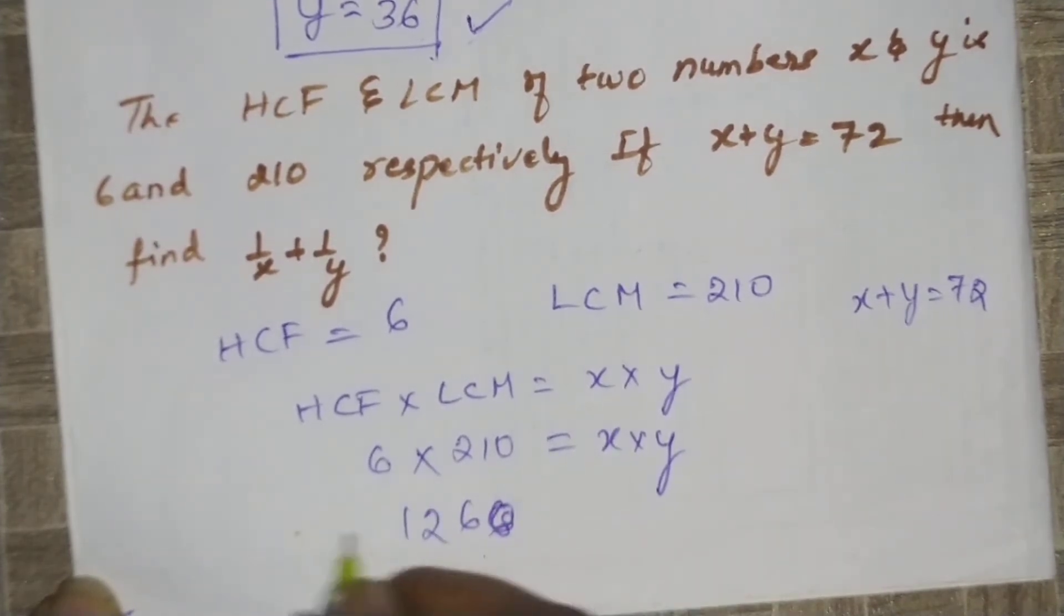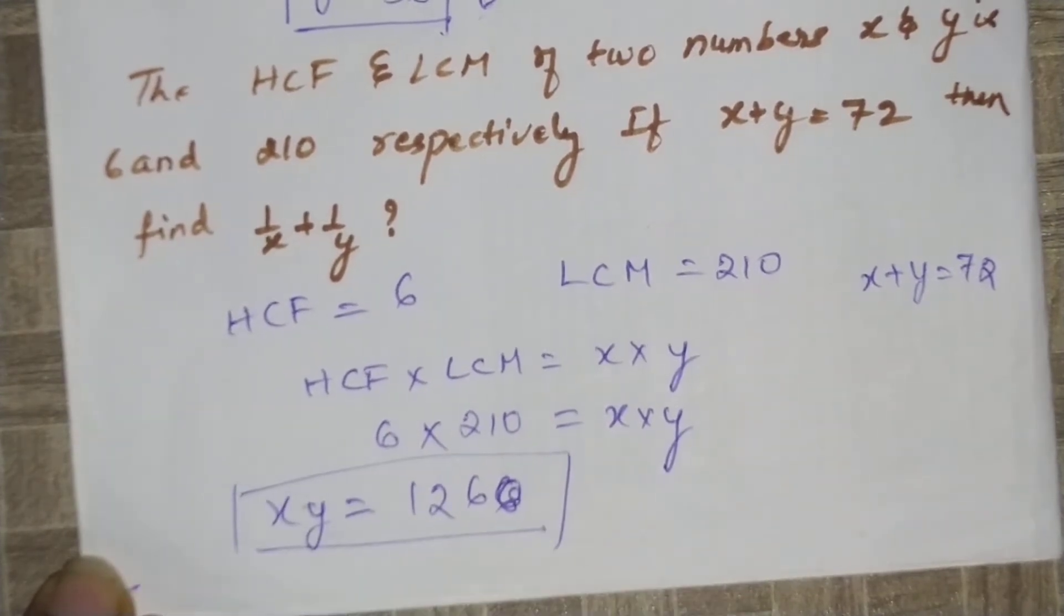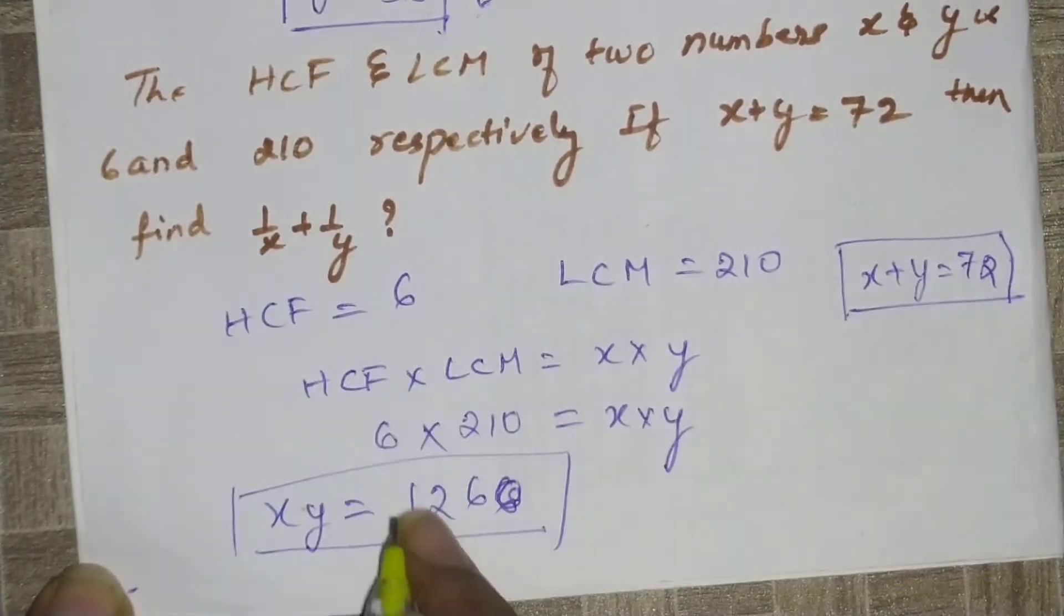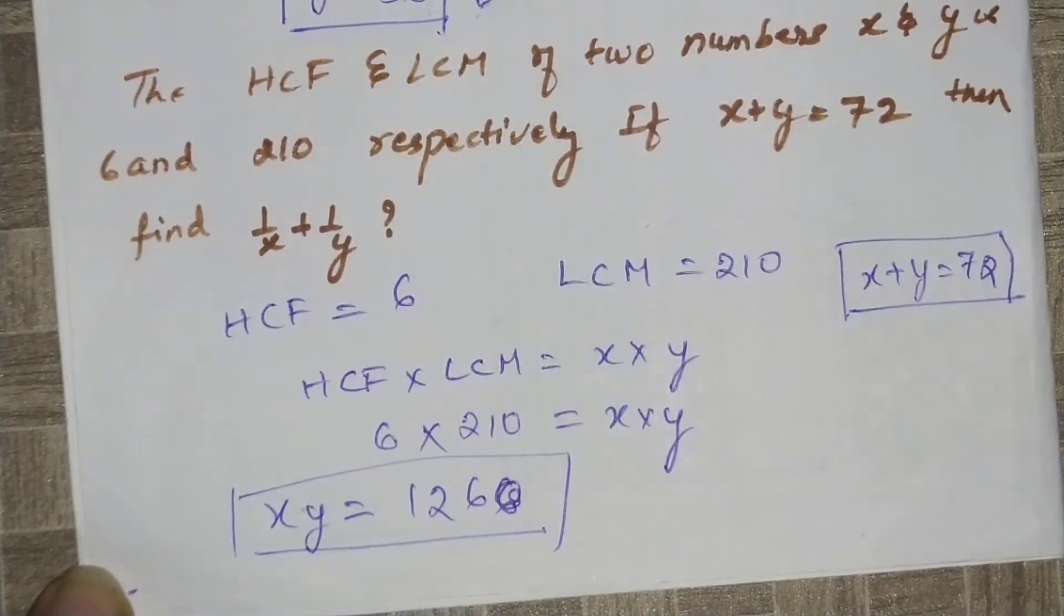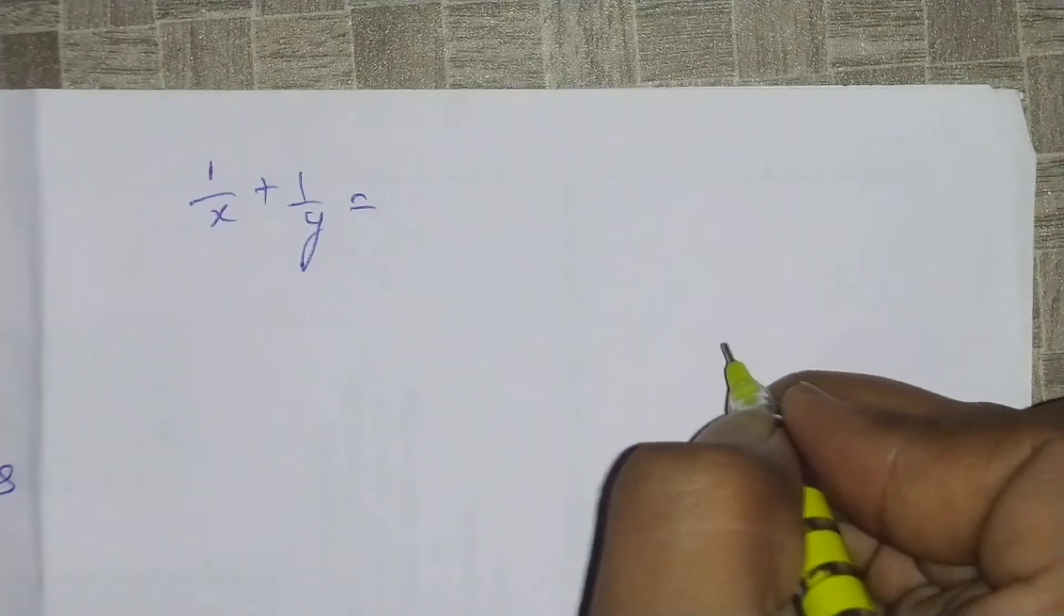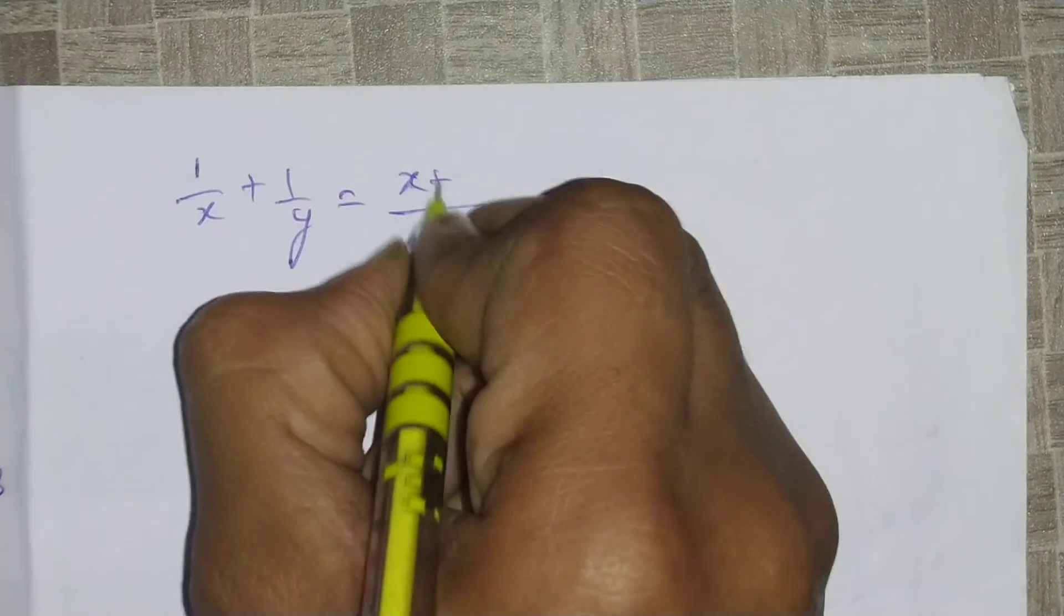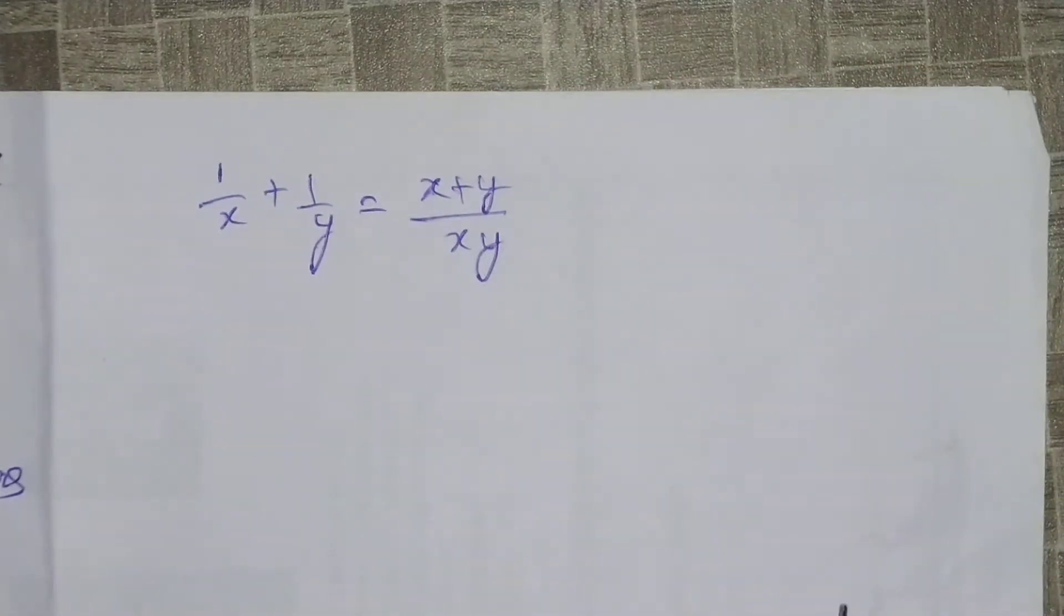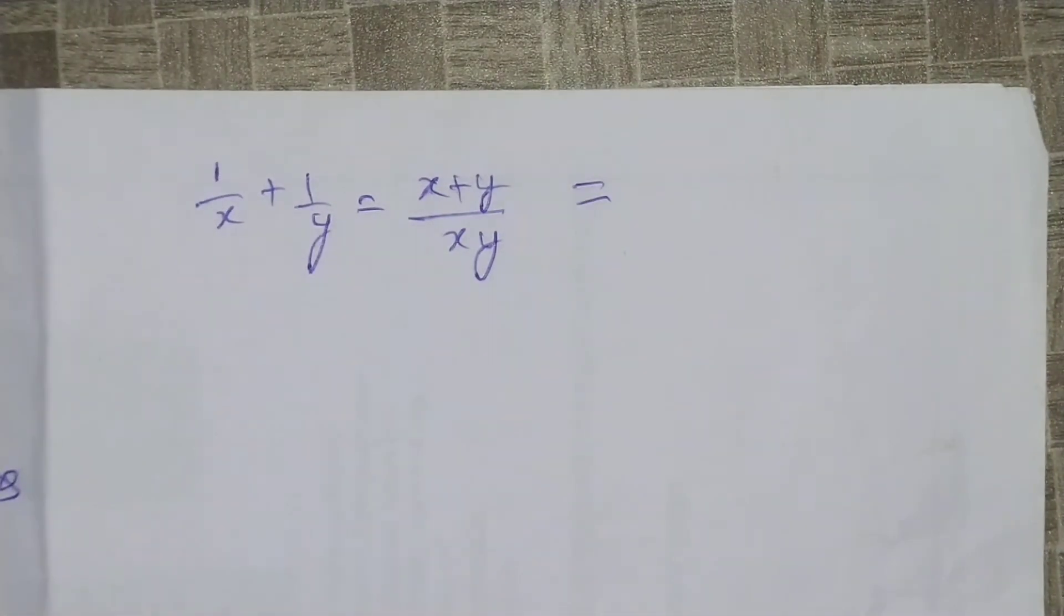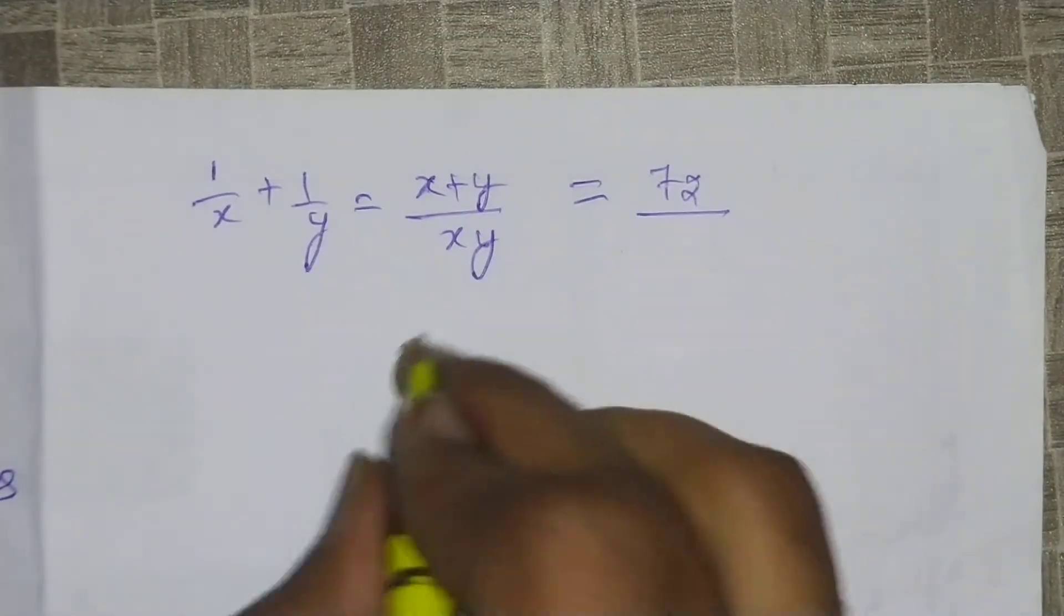Therefore, x times y equals 1260. Next we have to find the value of 1/x plus 1/y. This equals (x plus y) divided by xy, taking LCM.